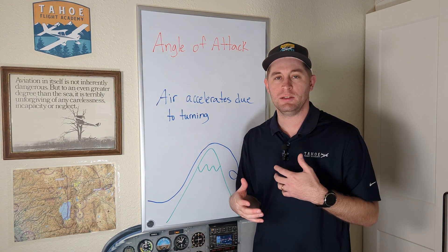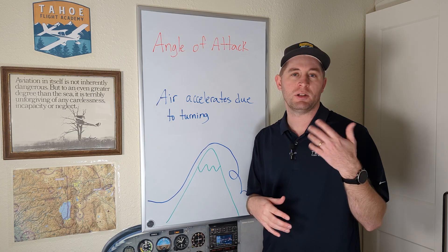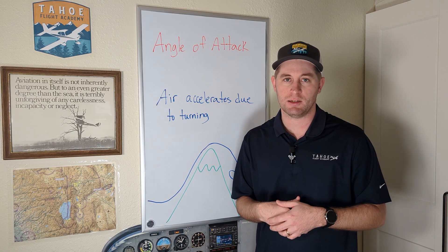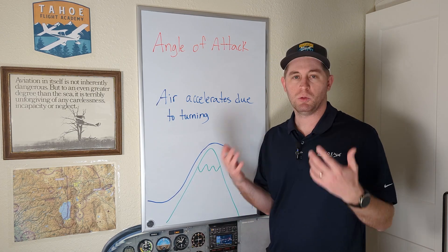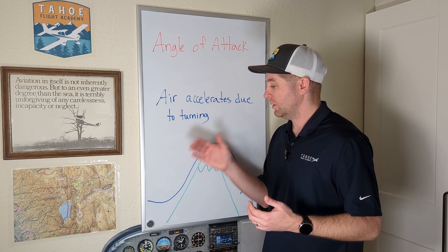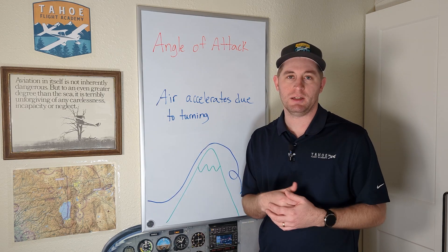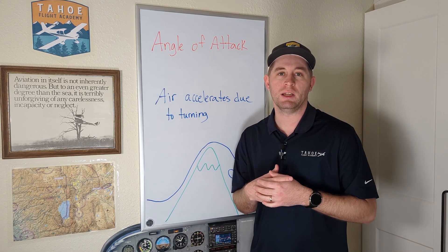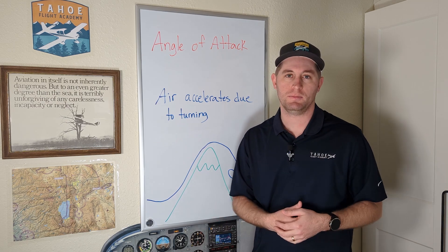The last thing I'll leave you with is this visual to make it easier to understand. We all know that air accelerates over mountain ranges — but why? Well, it's the same principle: it's turning, so it's accelerating. Think of a wing as doing the same thing to the air.